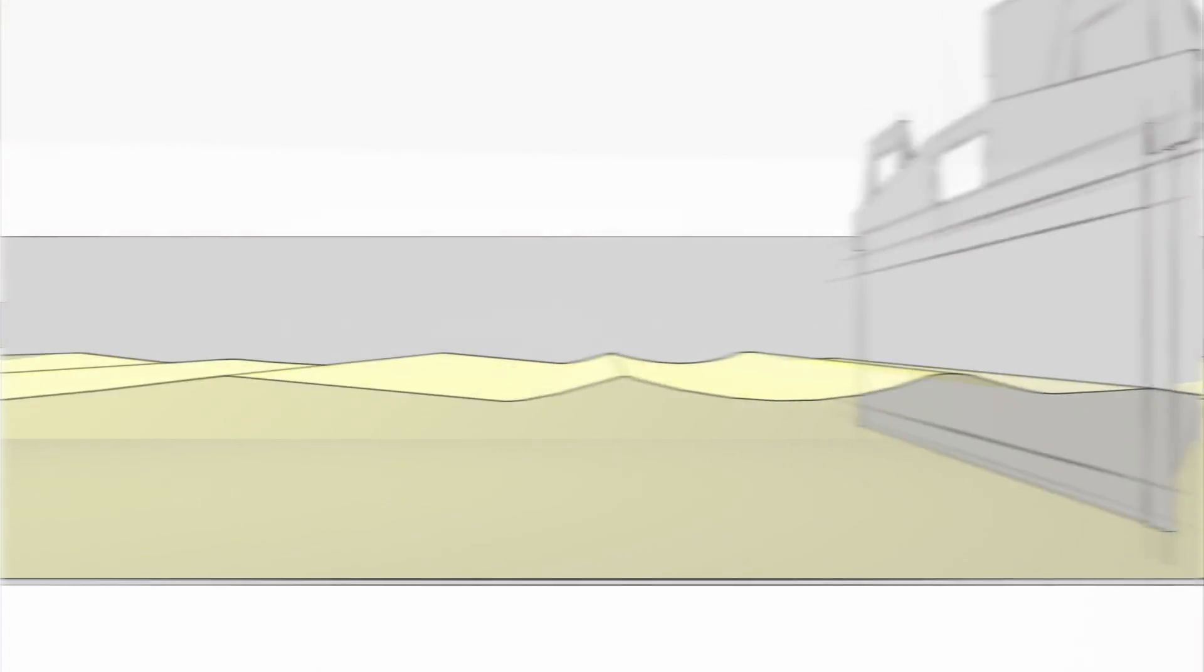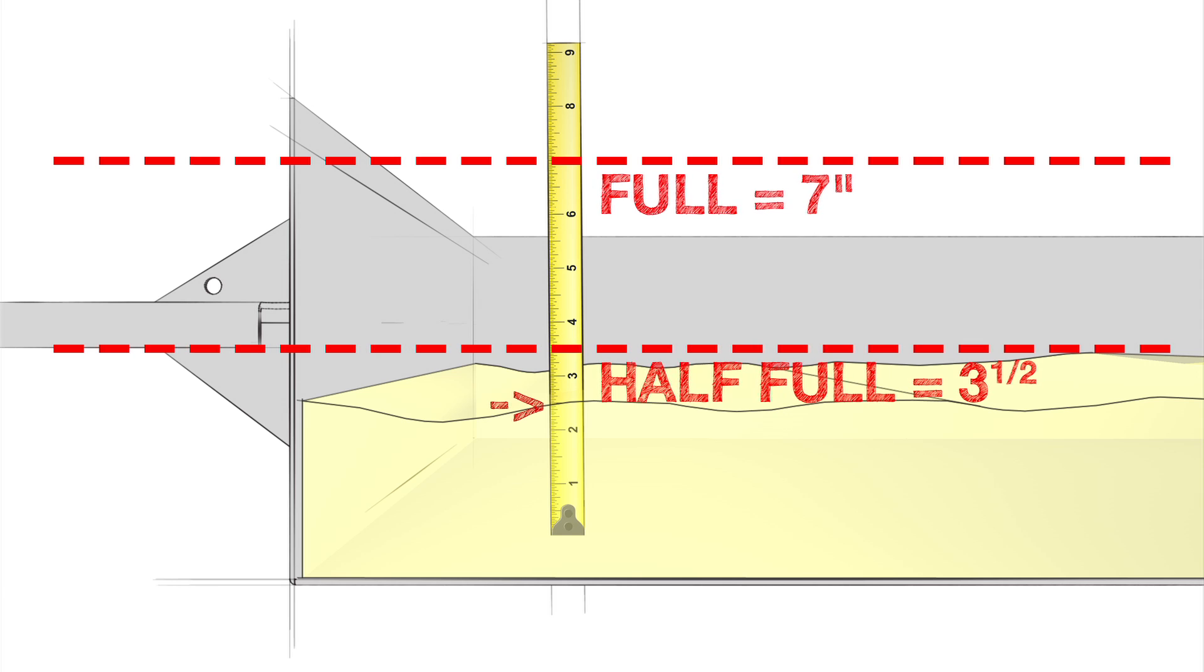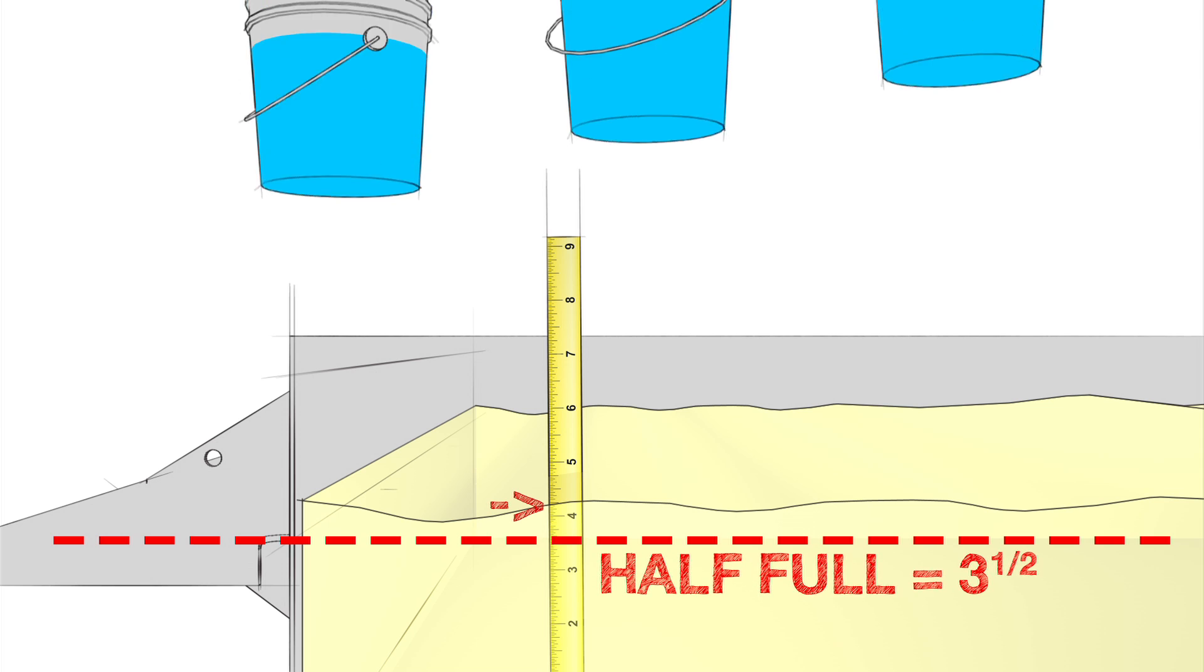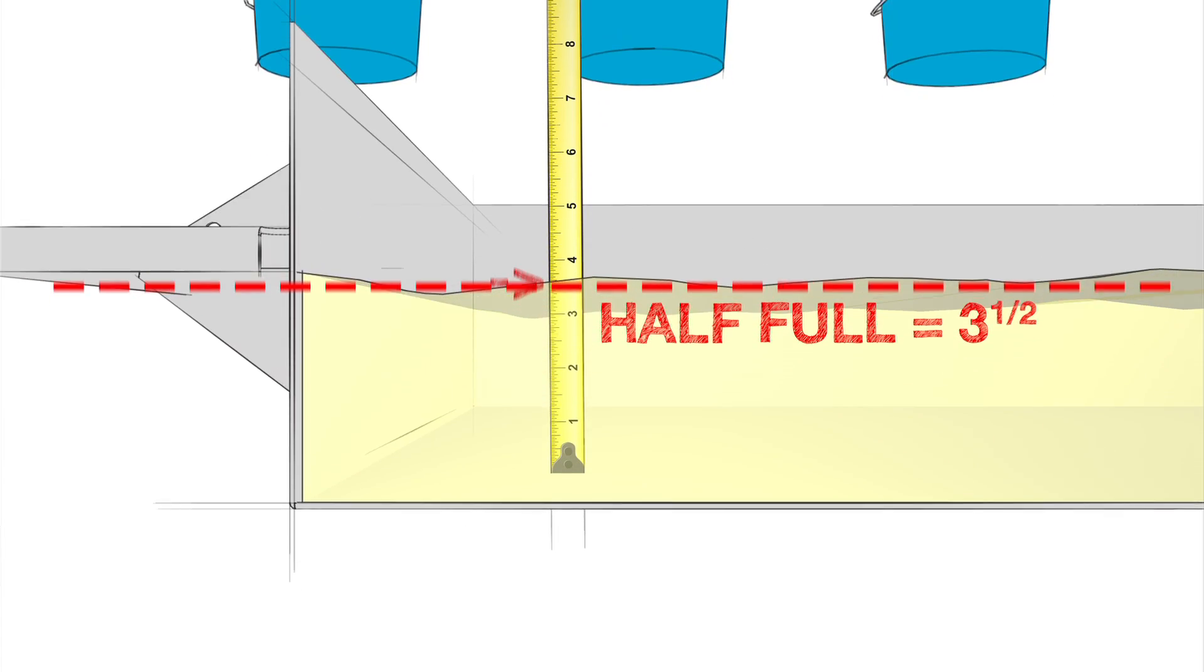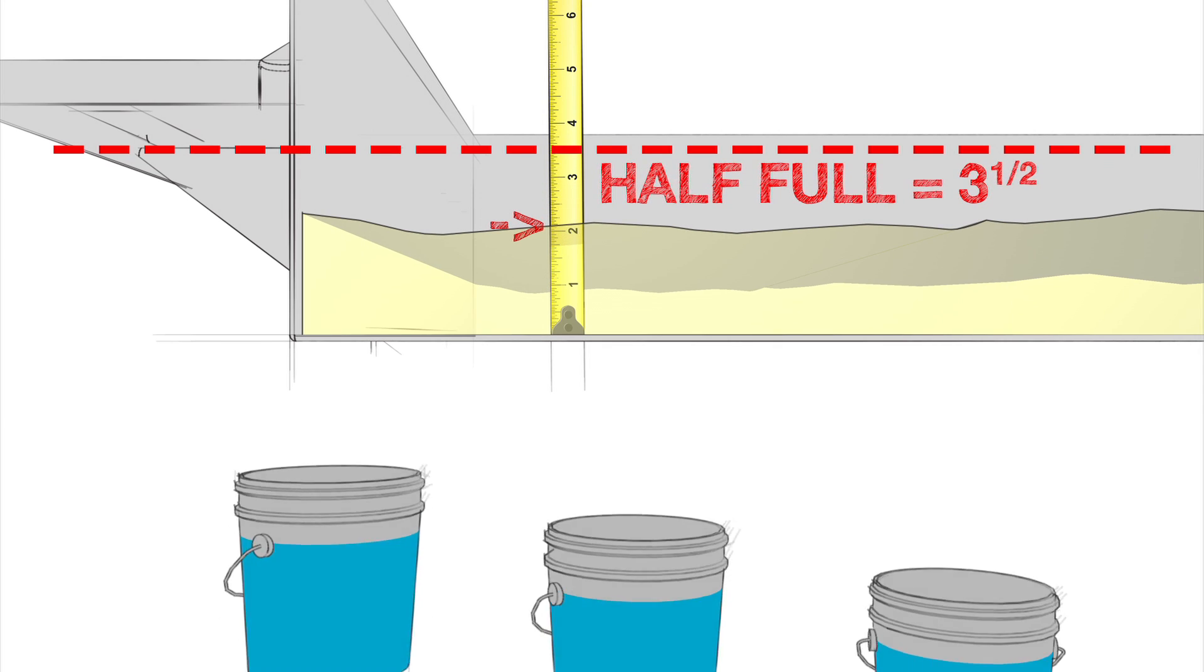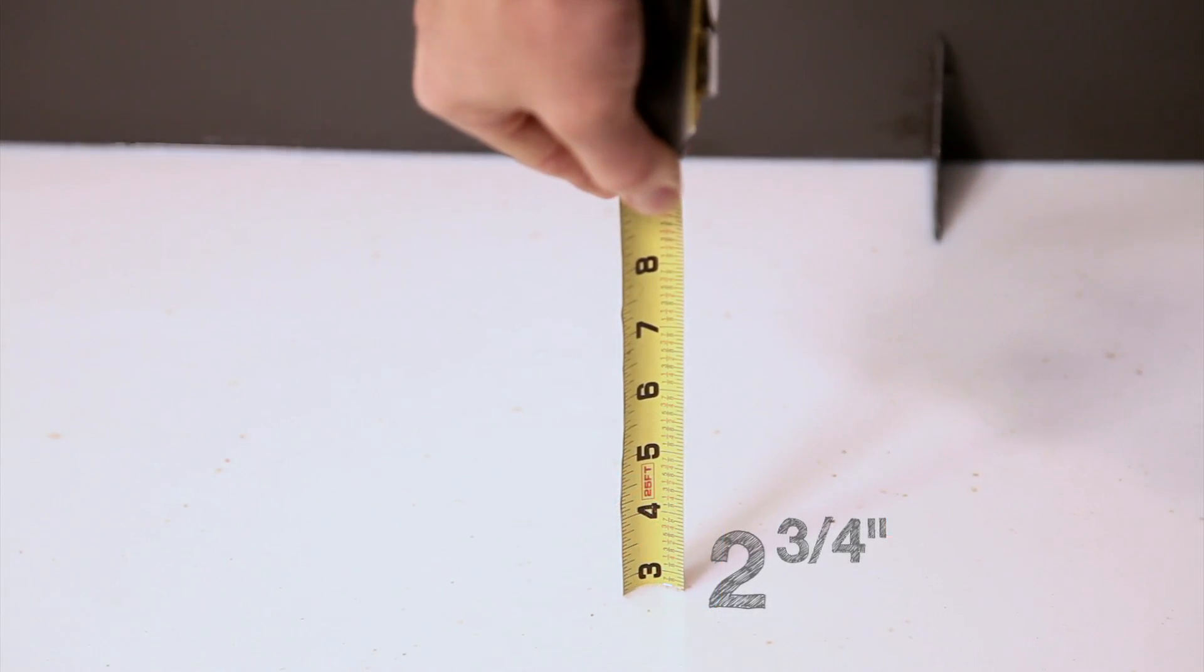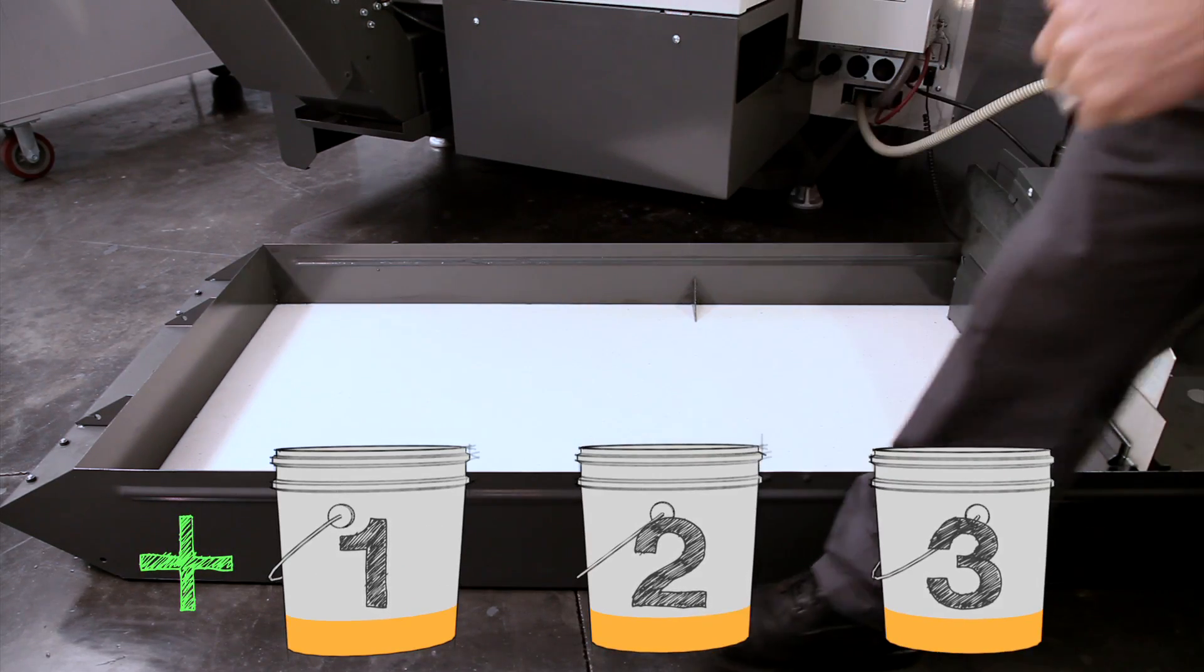When the Haas 55 gallon tank is full, the coolant level reaches seven inches. So at half full, the level is three and a half inches. Our rule is if the coolant level is over three and a half inches, add two and a half gallons of concentrate. If the coolant level is under three and a half inches, add three gallons of concentrate. Our measurement is under three and a half inches, so we need three gallons of concentrate.